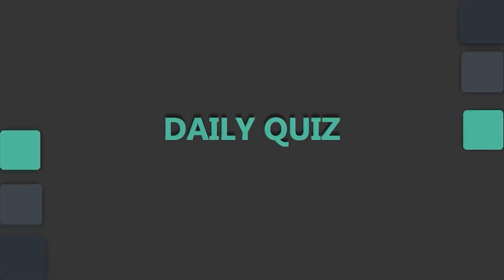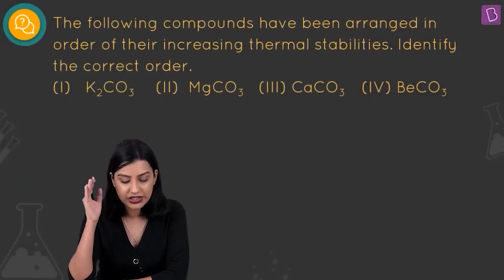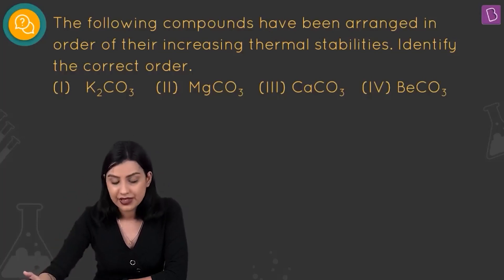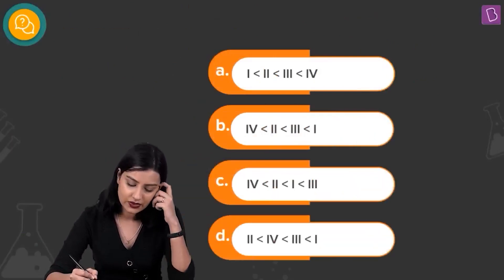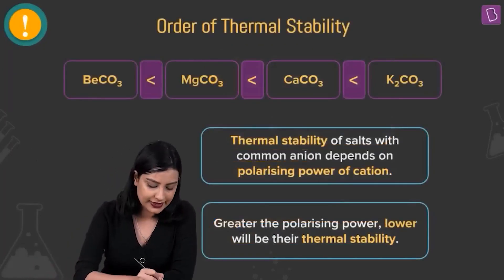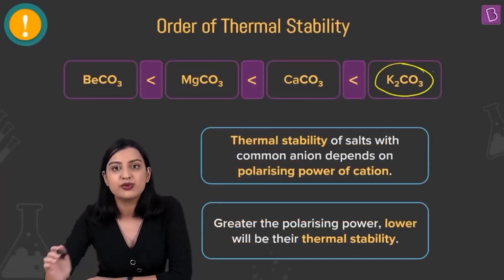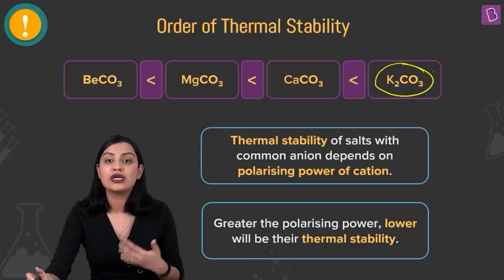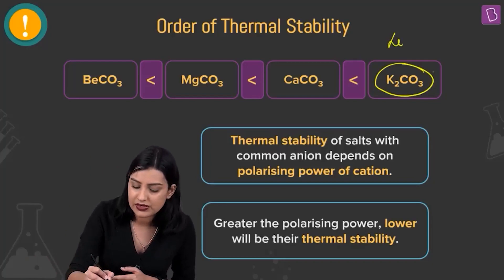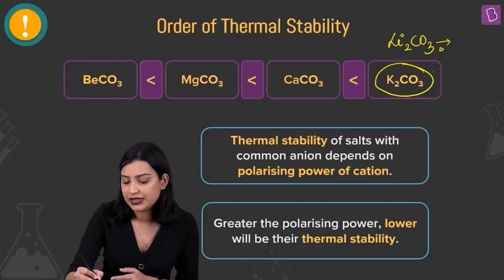Here we have four compounds — potassium carbonate, magnesium carbonate, calcium carbonate, and beryllium carbonate — and we need to arrange them in order of increasing thermal stability. Potassium carbonate has maximum thermal stability because Group 1 carbonates do not decompose on heating; only lithium carbonate is an exception, behaving like a Group 2 element and giving Li₂O plus CO₂.